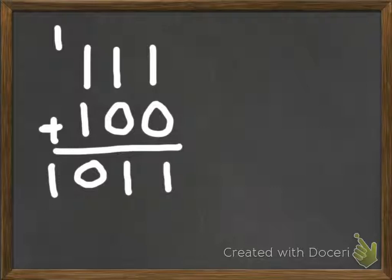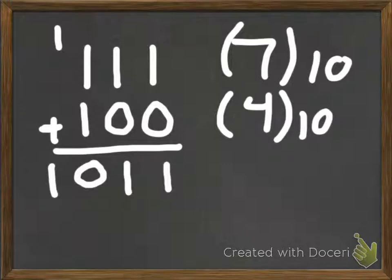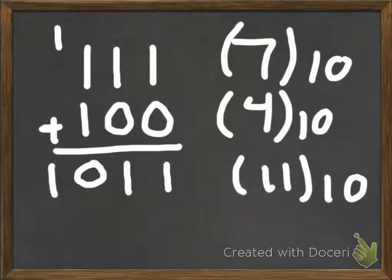Let's check the result. In the top number we have one plus two plus four, which is seven. In the next number we have two to the second, which is four. Seven plus four is eleven in base ten. Going through the binary result: two to the zero is one, plus two to the one is two — that's three — plus two to the third is eight. Eight plus three equals eleven, so that checks out.